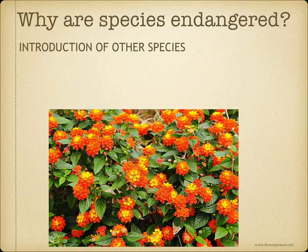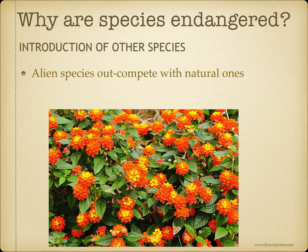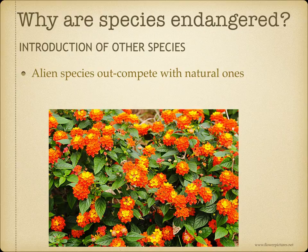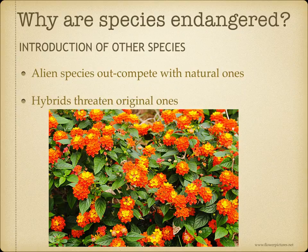Introduction of other species is another cause. Humans often introduce other species that out-compete with the natural ones. Almost half of all small to medium-sized Australian marsupials have been killed by competition when rabbits were introduced, and then predation by foxes and cats. In Zimbabwe, the lantana flower was introduced — this is an invasive species that spreads quickly and is poisonous to animals. Hybrids also threaten the original species.